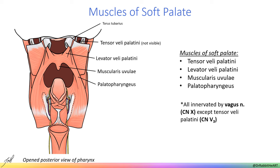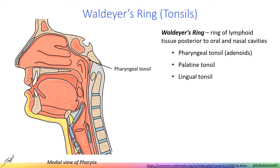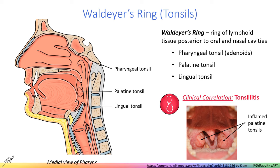Within the pharynx, Waldeyer's ring forms a complete circle of lymphatic tissue behind the oral and nasal cavities. This ring is composed of three collections of lymphatic tissue called tonsils including pharyngeal, palatine, and lingual tonsils. The pharyngeal tonsil, also known as the nasopharyngeal tonsil or adenoids, is located at the superior most end of the pharynx behind the nasal cavity. The palatine tonsils are in the back of the oral cavity between the palatoglossal and palatopharyngeal arches. The lingual tonsil is located on the root of the tongue. Note that tonsils can become inflamed, a condition called tonsillitis, and in some cases may need to be surgically removed.